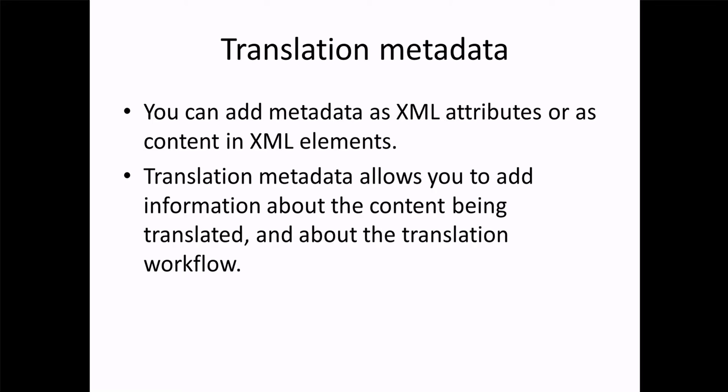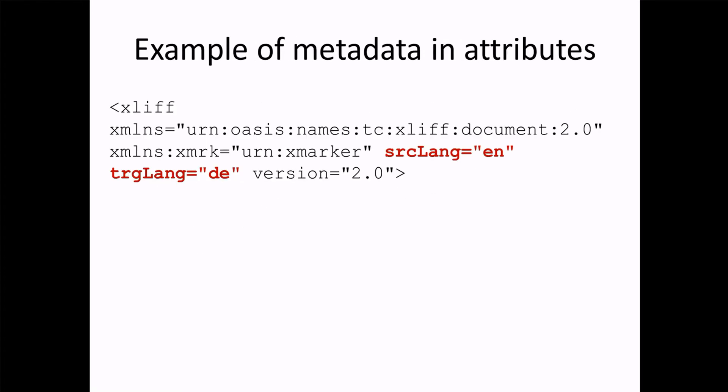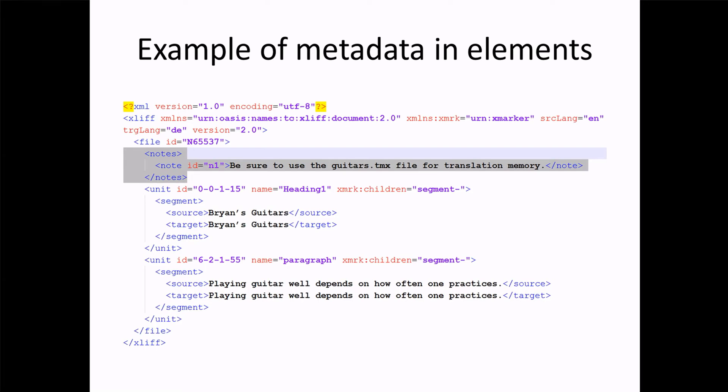Translation metadata: you can add metadata as XML attributes or as content in XML elements. For example, the XLIF file's source language attribute is set to English and target language to German. An element-level example is a note saying 'be sure to use the guitars.tmx file for translation memory' — a note to the translator that is not to be translated, just metadata about the workflow.